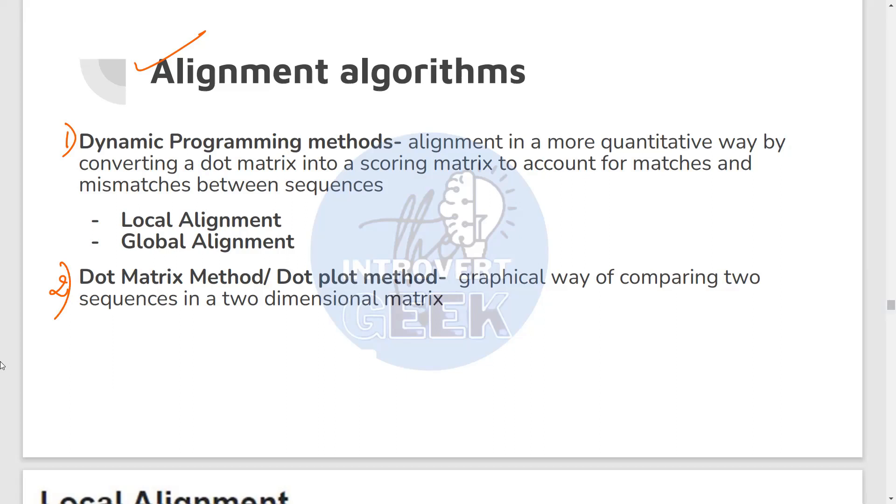So we have three major alignment algorithms. First is called the dynamic programming method. Second is the dot matrix or dot plot method. Third is the heuristic methods. Heuristic methods are more advanced and they are used for high throughput sequencing. We are not going to dive into those because they are not a part of the syllabus that DBT asks. So we are going to focus on two: dynamic programming methods and the dot matrix method.